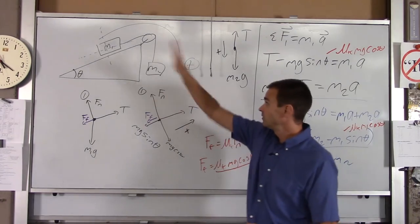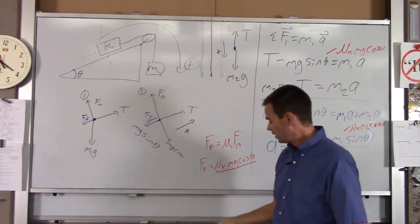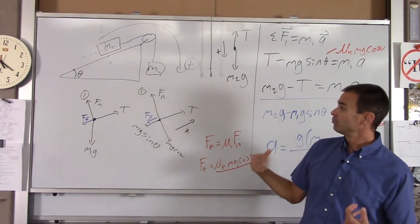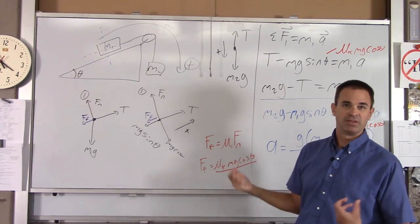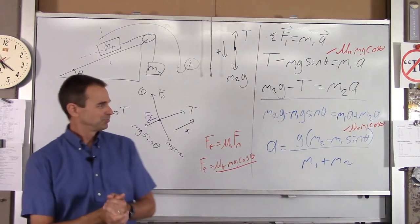Again, assuming that this thing is accelerating clockwise. So that's an example of motion of two objects, one of them on an incline, without and then with friction. Thank you very much.